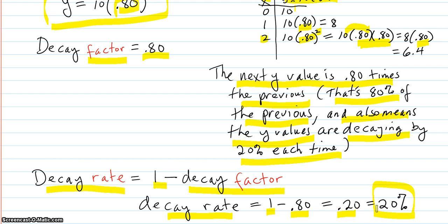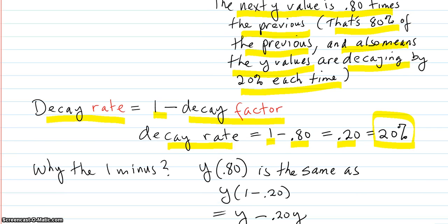So it's not decaying by 80%. The decay factor is 80%. That's the number you hit by it. But it's actually dropping by 20% from 10 to 8, 8 to 6.4. 20% of 8 is 1.6. 8 minus 1.6 is 6.4. So it's dropping by 20% every time.